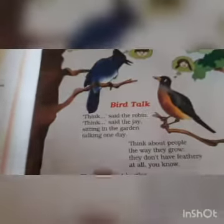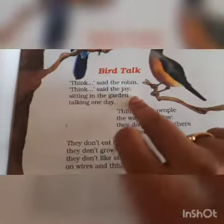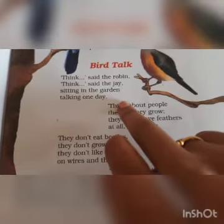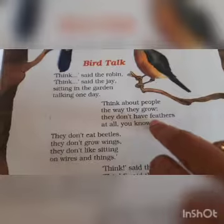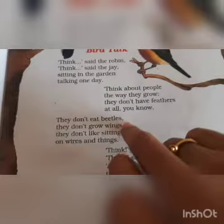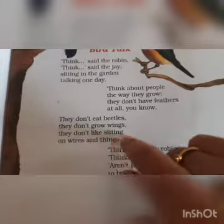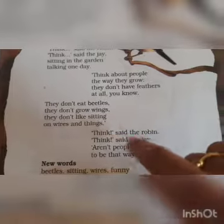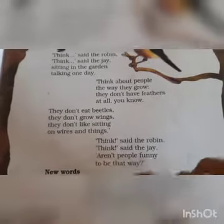So let's start reading the poem. Think, said the robin. Think, said the jay. Sitting in the garden, talking one day. Think about people, the way they grow. They don't have feathers at all, you know. They don't eat beetles. They don't grow wings. They don't like sitting on wires and things. Think, said the robin. Think, said the jay. Aren't people funny to be that way?